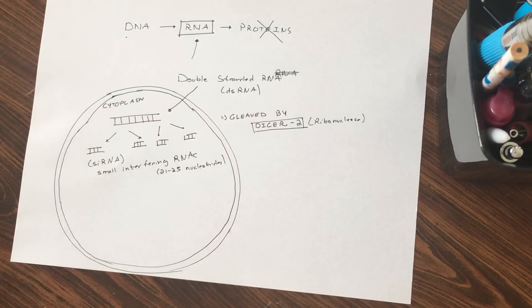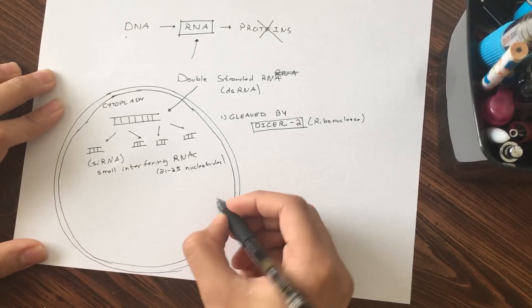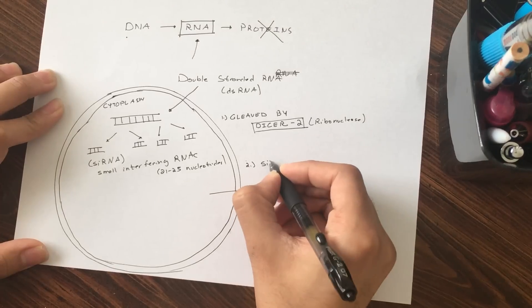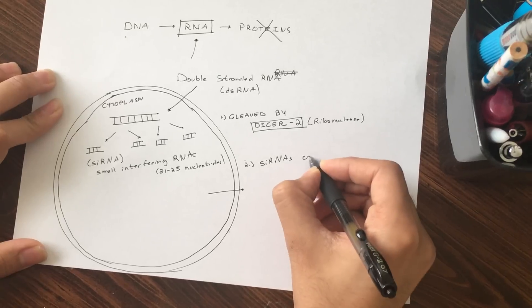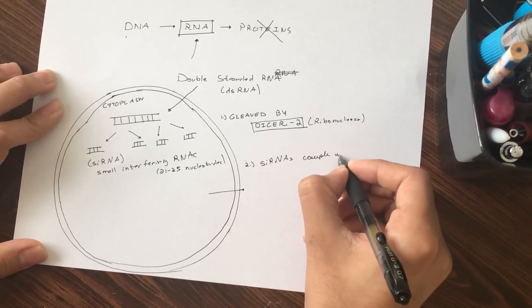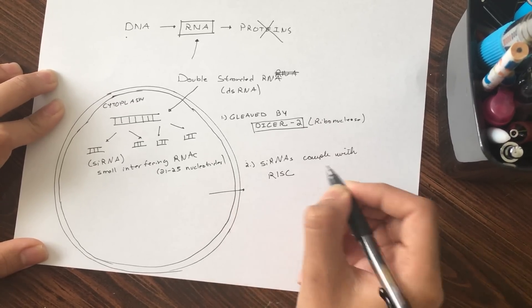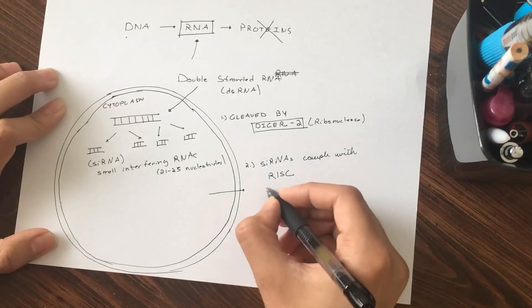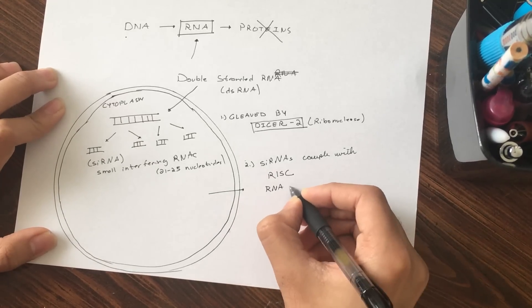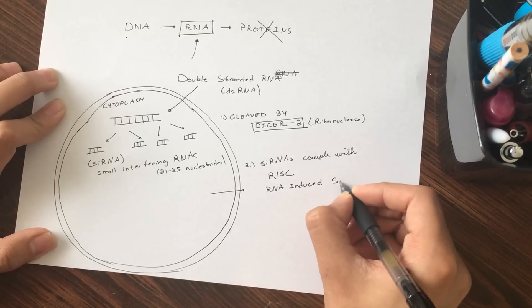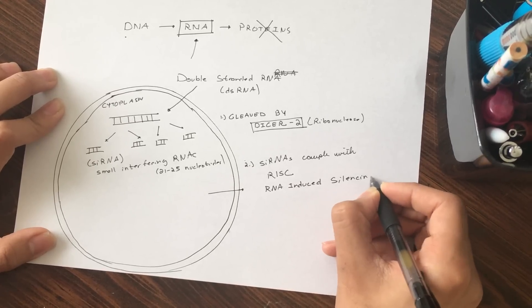What happens next is that these siRNAs actually assemble with a protein component. So the second step is these siRNAs couple with what's called RISC or RNA-induced silencing complex.